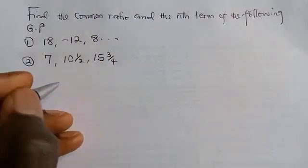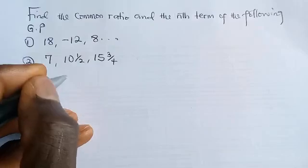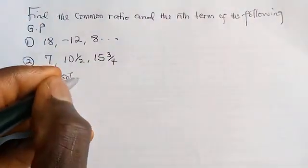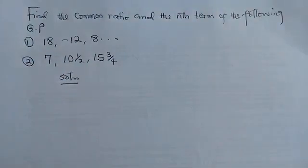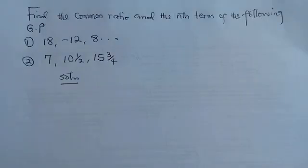To find the common ratio of a geometric progression, we simply do that by dividing the second term by the first term, and the third term by the second term, in that order.